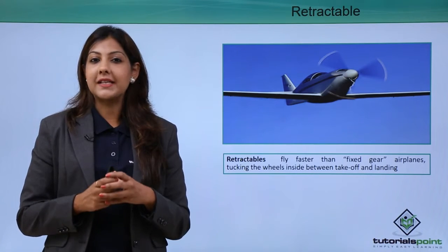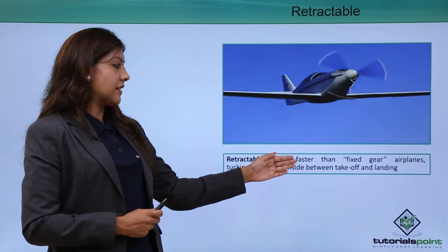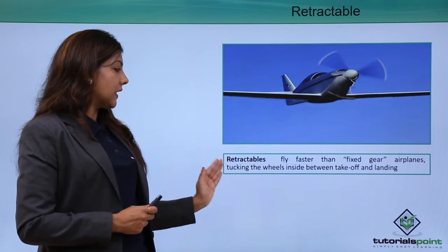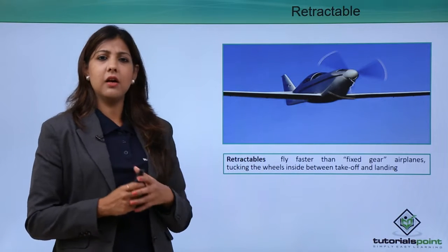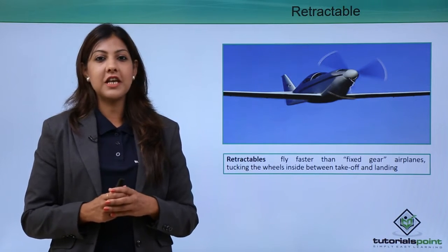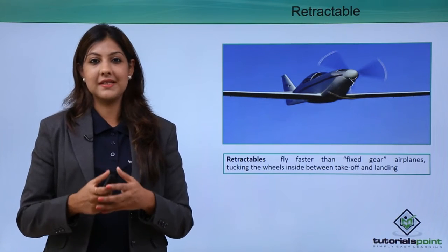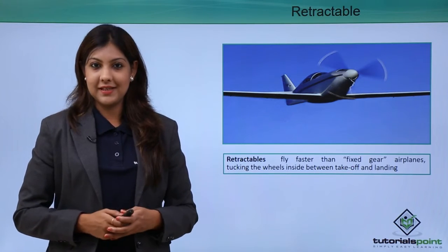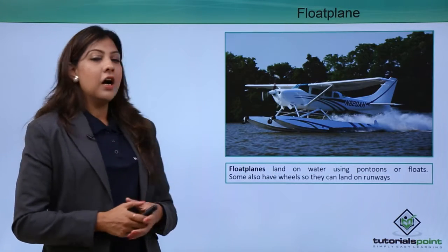There are certain aircrafts known as retractables. Retractables fly faster than fixed gear airplanes by tucking the wheel inside between takeoff and landing. In most aircraft after takeoff the wheels go inside, but in retractables this does not happen — the wheels remain extended.